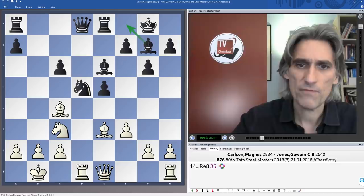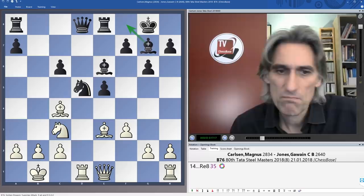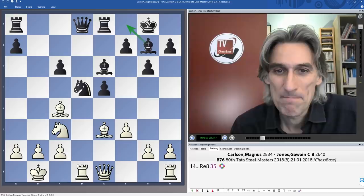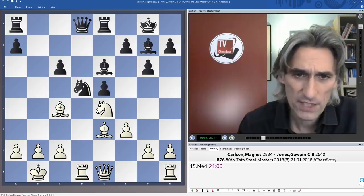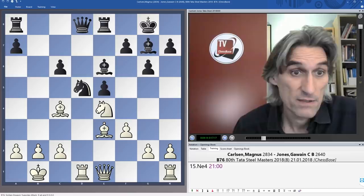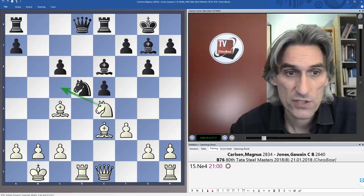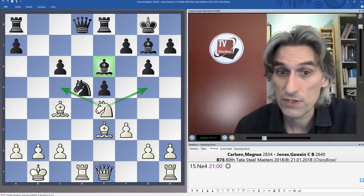Carlsen now thought for 21 minutes, and he admitted after the game that he was actually a little bit surprised by the Dragon. I'm not quite sure why. He admitted that his opponent knew this position much better than he did. So yes, 21 minutes he thought over knight e4. A very natural move in this position. Just looking at these two squares, preparing to hassle that incredibly important light square bishop.